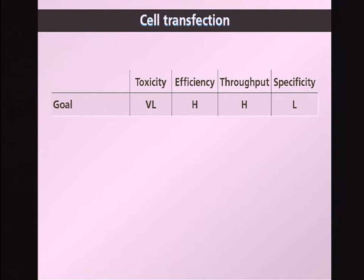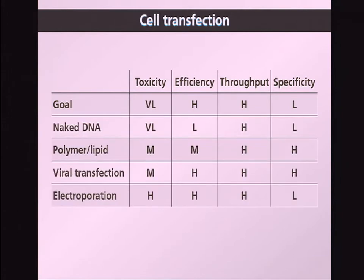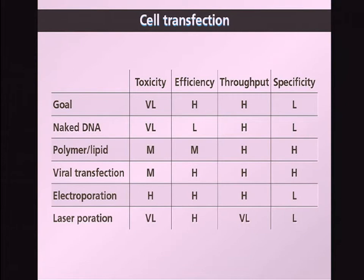The goal would be to achieve very low toxicity, high efficiency — meaning a large number of cells get transfected — high throughput, and low specificity so that many different cell types can be transfected. The standard approaches all have shortcomings in one or more of these criteria. The laser poration demonstrated a number of years ago has advantages in toxicity and efficiency, but falls short on throughput because you need to transfect a single cell at a time.